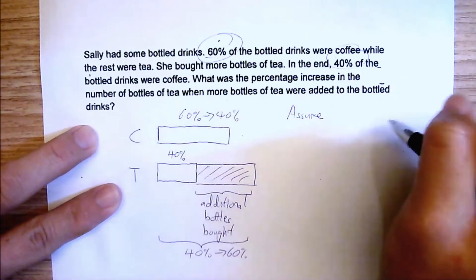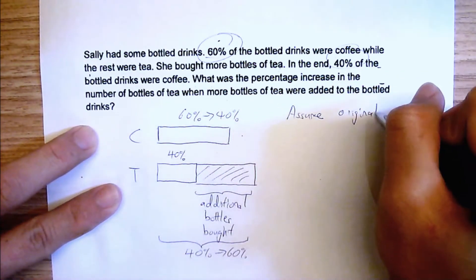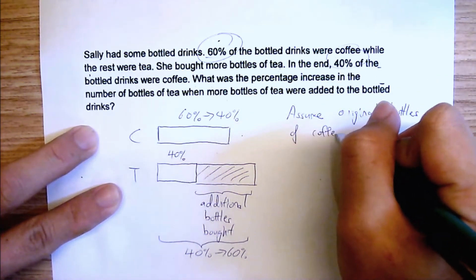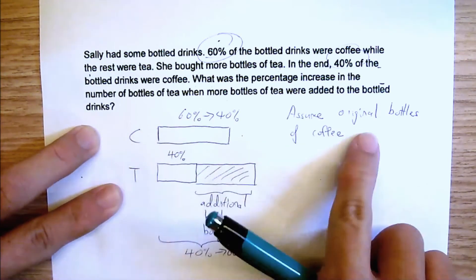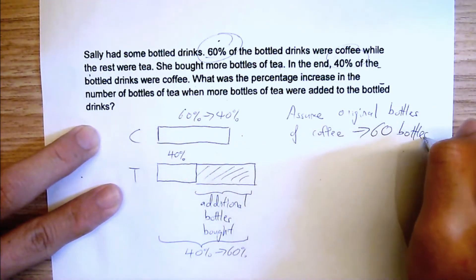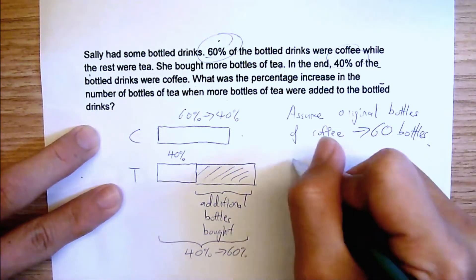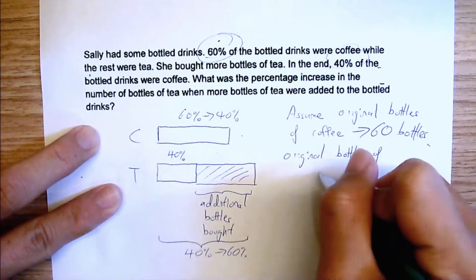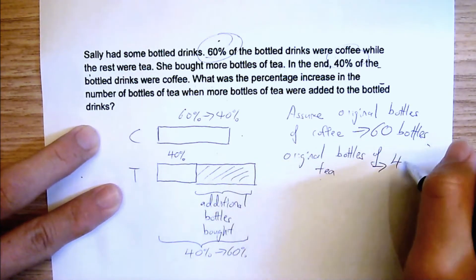Assume original bottles of coffee. Instead of putting it to 60%, I'm going to say that bottles of coffee, right, 60 bottles. And because of this, original bottles of tea will be 40 bottles.